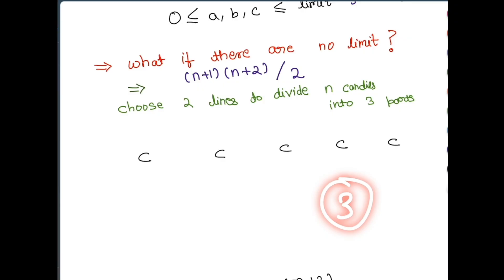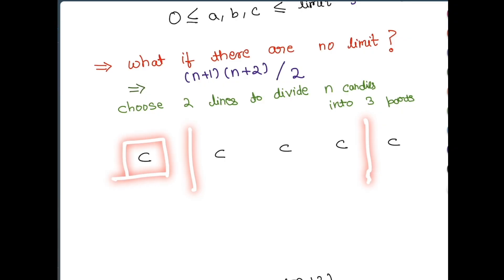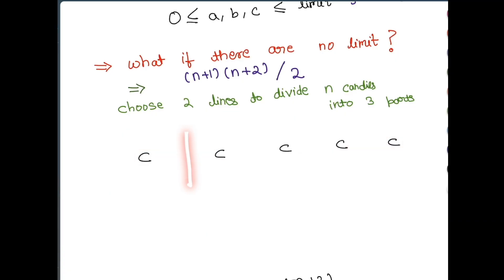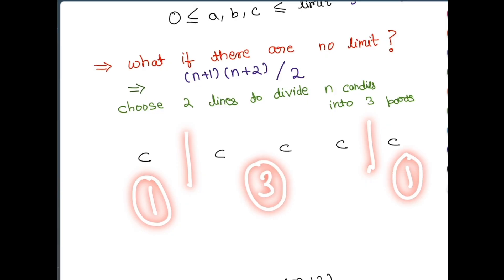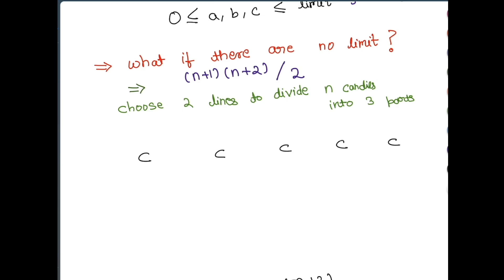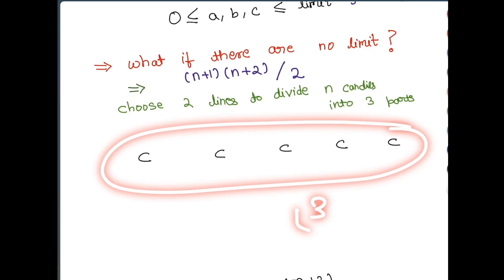So to distribute among 3 children I need to choose where to place 2 dividing lines. You can also put both lines at the same position — for instance both lines at the start means child 1 gets zero, child 2 gets zero, and child 3 gets five candies. The number of ways I can place these two lines determines how many ways I can distribute the five candies among three children when there is no limit.